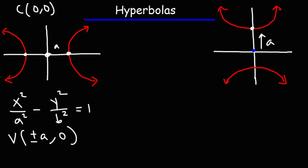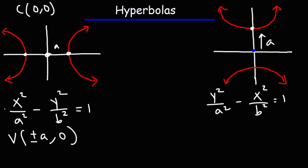The equation that corresponds to the vertical hyperbola is y squared over a squared minus x squared over b squared, which equals 1. When a squared is under x squared, it's going to open left and right — that is, when there's a positive sign in front of x squared. When there's a positive sign in front of y squared, it opens up and down. A squared is always under the positive term, and b squared is under the negative term.